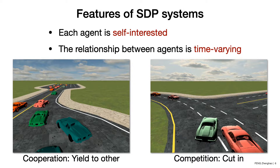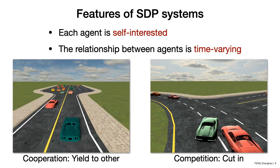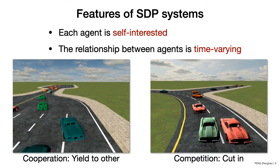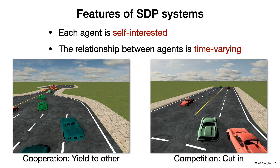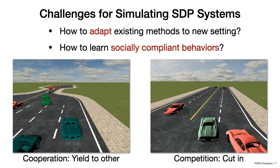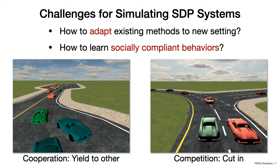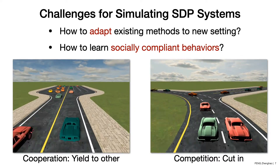We summarize the key features of the SDP system. First, each individual is self-interested. Because of this, the relationship between agents is time-varying. For example, agents can form cooperative relationships — like learning to yield to others — but they can also be competitive, such as learning to cut in front of others to drive faster. To face these new features, challenges exist for current methods: how to adopt existing methods to this new setting, and how to learn socially-compliant behavior in a population.